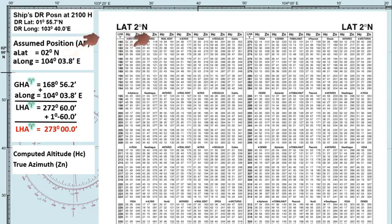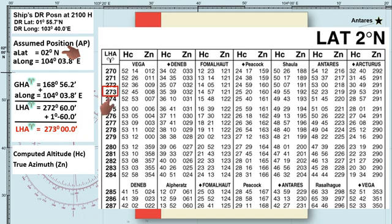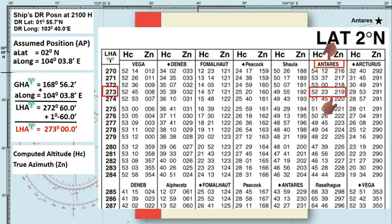In this column, you can find the LHA of Aries. Our LHA is 273 degrees, and it is here. As we observe, the latitude is in a whole number of degrees, so as with the LHA of Aries. This is the reason why our assumed latitude and LHA are also in a whole number of degrees. Our LHA of Aries is 273 degrees and the observed celestial body is star Antares. We can find the computed altitude and the true bearing of the star Antares here. The computed altitude is 52 degrees, 23 minutes, and the true azimuth is 219 degrees true.